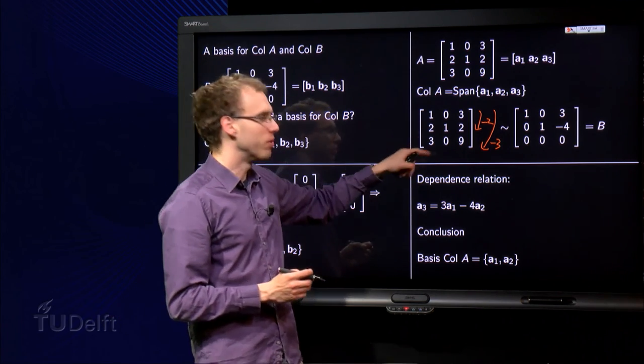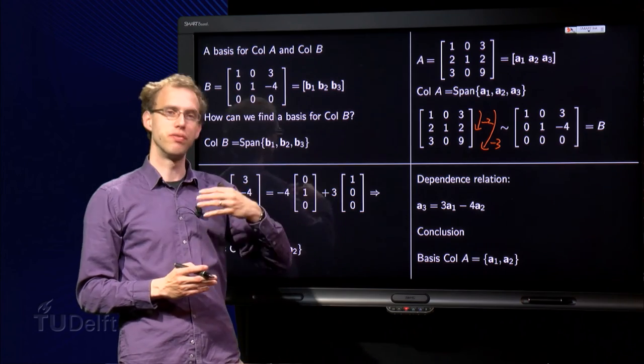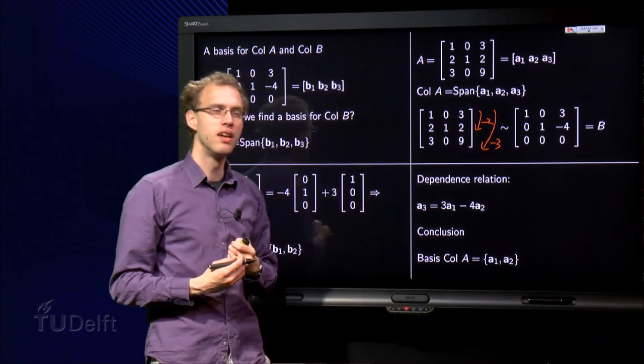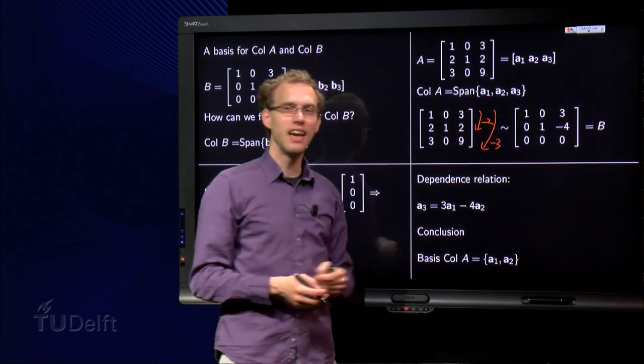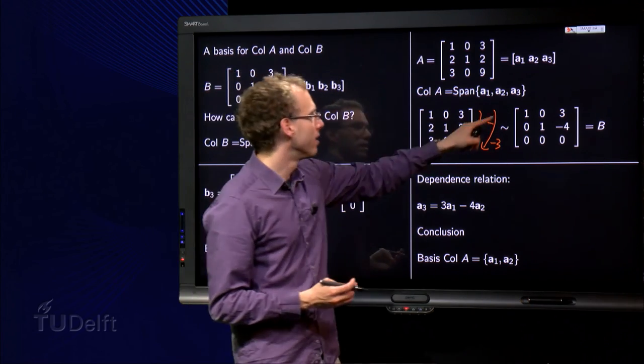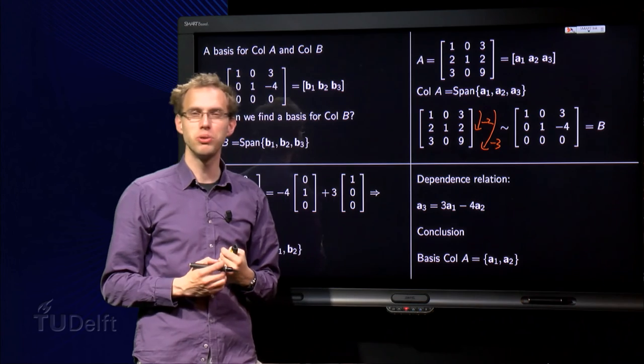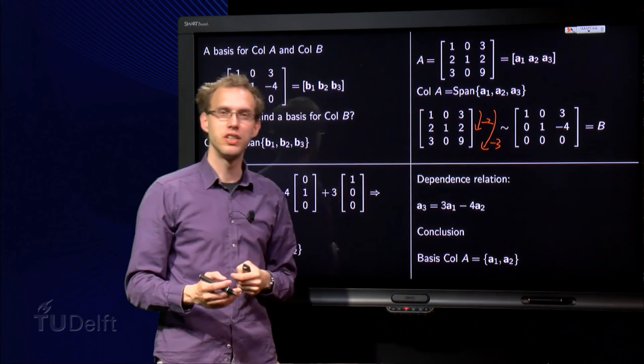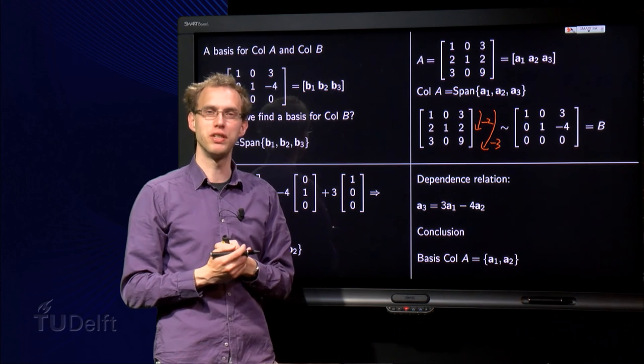Our question: We started with A, we did a row reduction, we found the first two columns are independent, and we got to B. Could I have taken as a basis of col A the columns of the reduced echelon form of the matrix? Could we have taken [1, 0, 0] and [0, 1, 0] as a basis for col A?